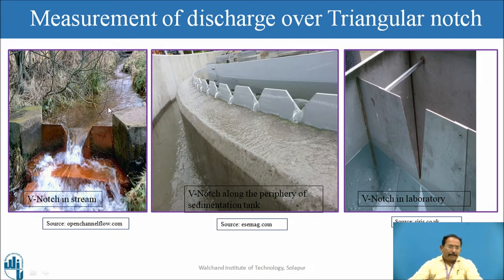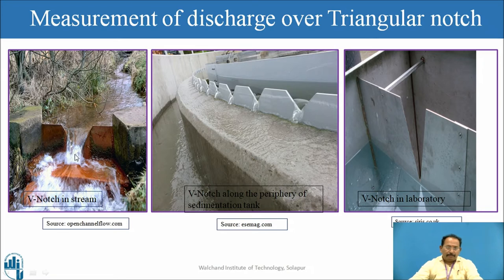In the first figure, concentrate on the first figure — this is a natural stream. In the natural stream, this triangular notch or V notch is located and the discharge is passing through this. So the first case is in the natural stream.